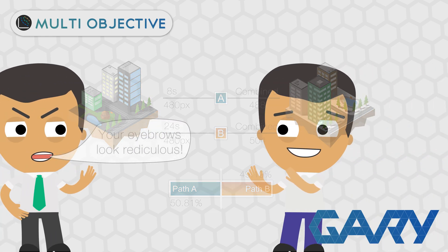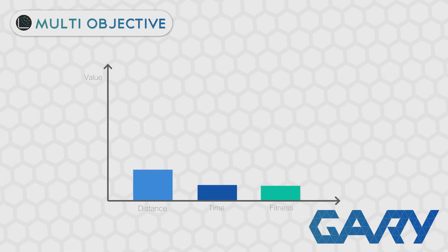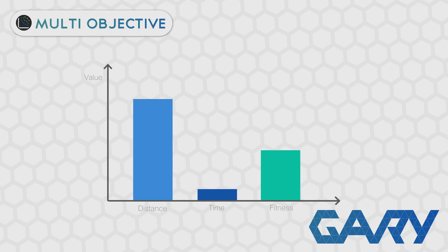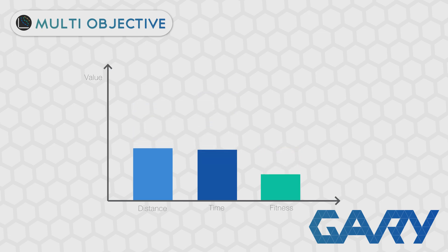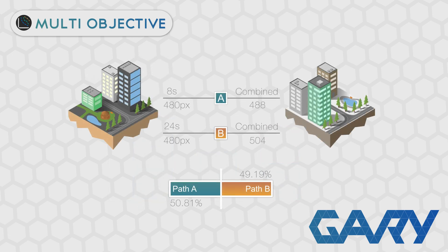Some of you must be screaming at your screen right now: you can't just add them together, they're on completely different scales. Huge changes in time taken hardly impact the fitness at all, but a small change in travel distance does. So maybe we could multiply the time taken by some factor to make it similar in scale to our distance. In our example we could multiply by 20, which makes our longest trip time equal to our longest distance. Now that they are on the same scale we can add them together.